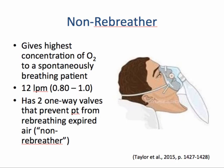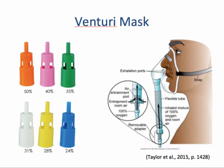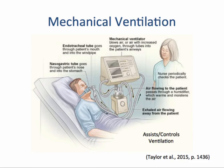The Venturi mask delivers the most precise oxygen concentration, based on the Venturi principle: as the tube narrows, pressure drops, causing air to be pulled in through side ports. Be sure that the ports are always open — obstruction by linens or clothes can result in an increase or decrease in oxygen concentration. Finally, mechanical ventilation can help with diffusion by administering a precise amount of oxygen and controlling other variables of oxygen delivery.